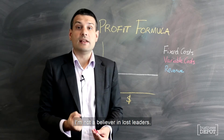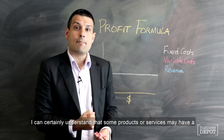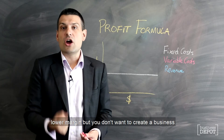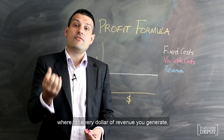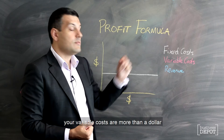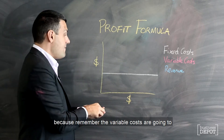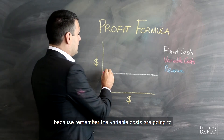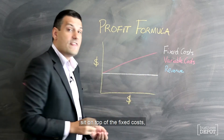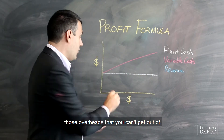You're going out of business backwards. I'm not a believer in loss leaders. I can certainly understand that some products or services may have a lower margin, but you don't want to create a business where for every dollar of revenue you generate, your variable costs are more than a dollar. Because remember, the variable costs are going to sit on top of the fixed costs — those overheads that you can't get out of.